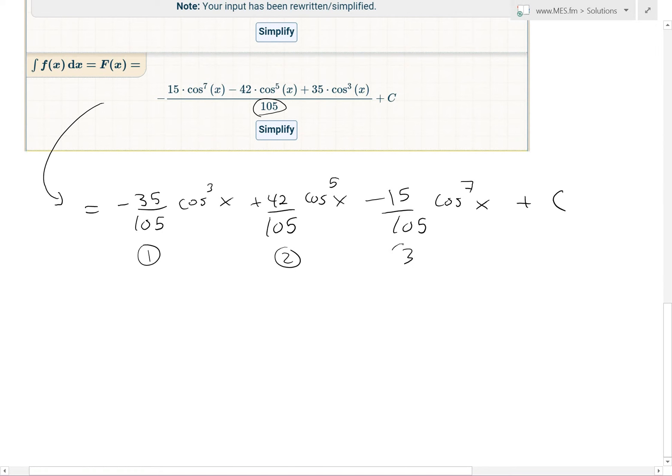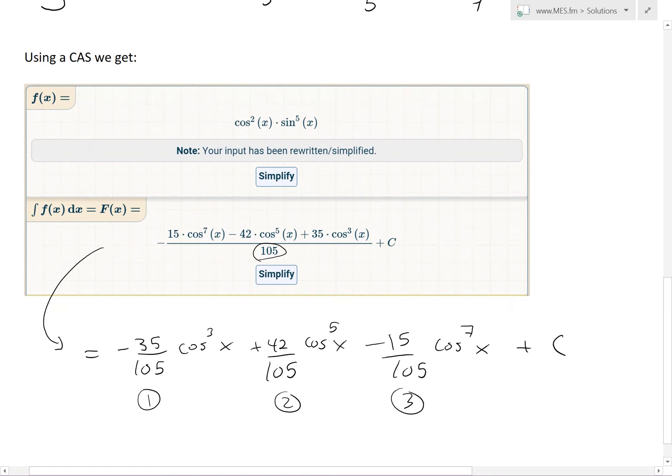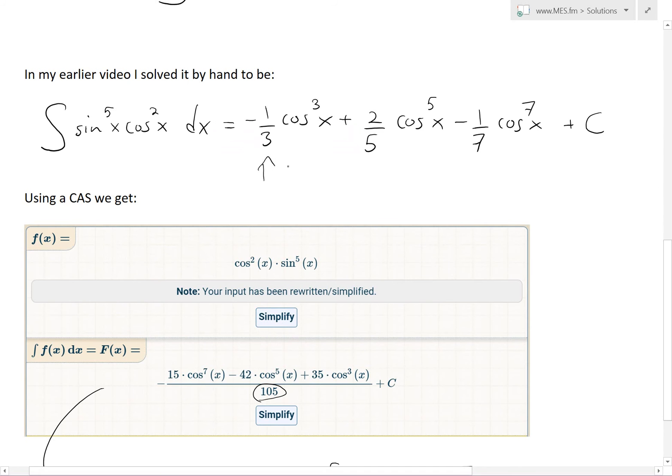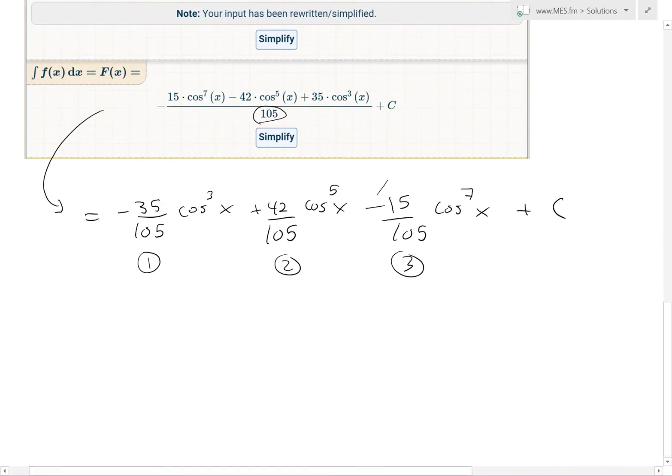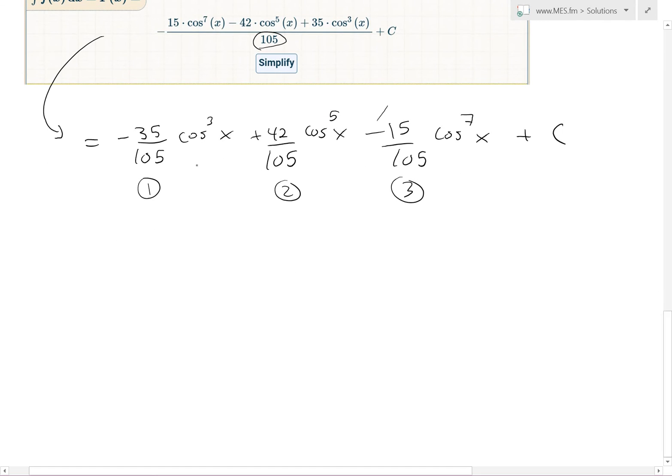So now what I'm going to show is that these constants right here are the same ones here if you simplified negative 1 over 3, 2 over 5, and 1 over 7. So the signs are correct. There's a negative, positive, and there's a negative. Same thing, negative, positive, negative. So we'll just need to prove that these are the same as the other ones.